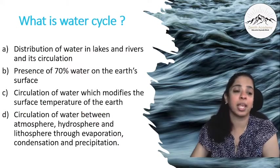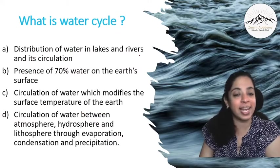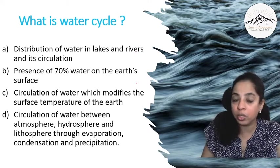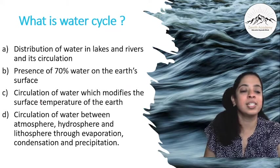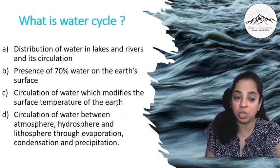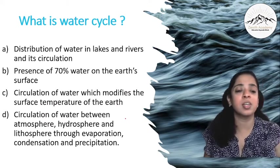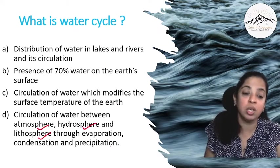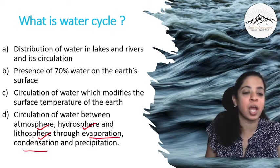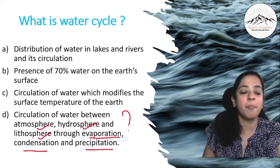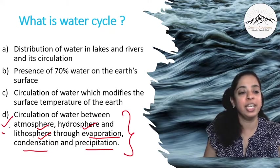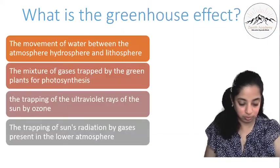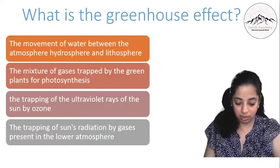What is water cycle? So read the options. Distribution of water in lakes and rivers and its circulation, or is it the presence of 70% water on the earth surface, or is it circulation of water which modifies the surface temperature of the earth, or it is the circulation of water between atmosphere, hydrosphere and lithosphere through evaporation, condensation and precipitation? So this is the perfect definition of water cycle. So option D is correct.